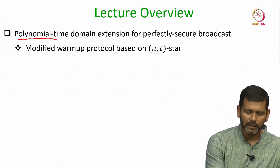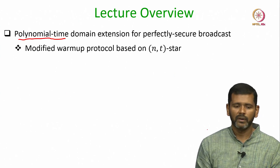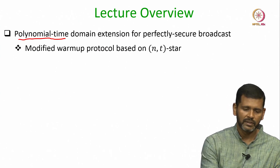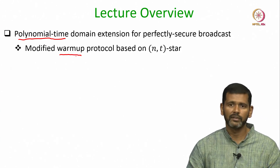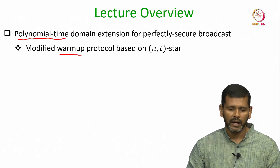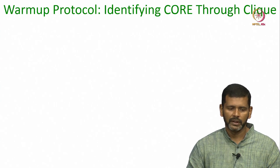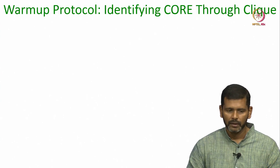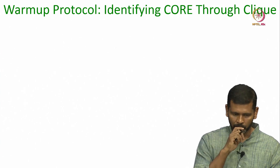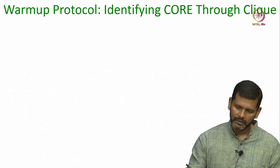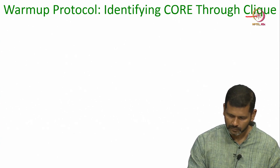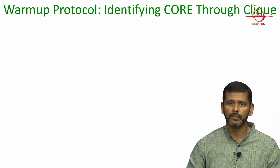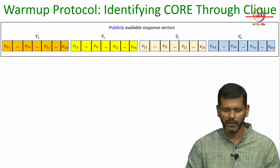To get the polynomial time protocol, what we just need to do is modify the warm-up protocol. The rest of the things remain the same as they were earlier for the exponential time protocol. So let us quickly recall the warm-up protocol and where exactly it requires the parties to perform an exponential amount of computation.